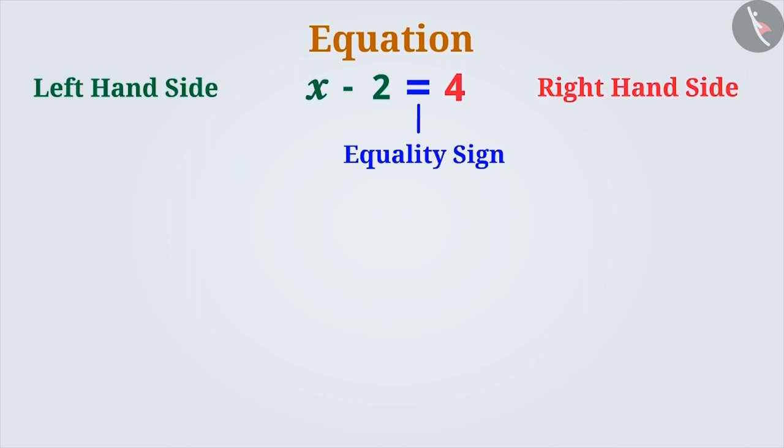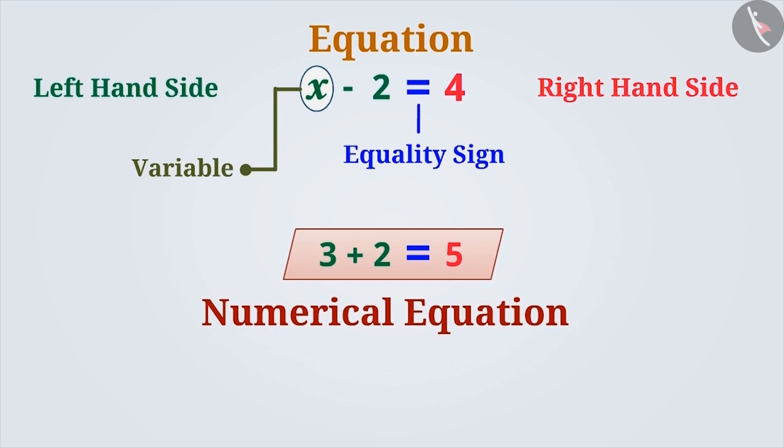It is not necessary that there should be a variable in every equation. Equations that contain only fixed numbers are called numeric equations. For example, 3 plus 2 equals 5.